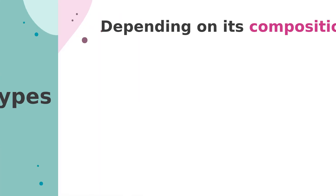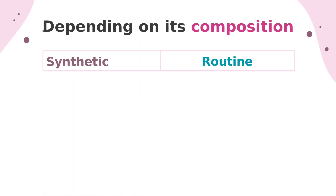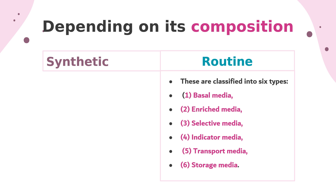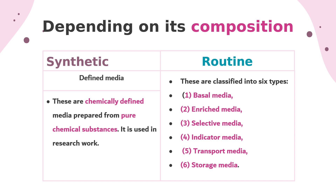What are the types of nutrient media? They are classified depending on many factors. Depending on their composition, they are classified into synthetic media and routine media. Routine media are classified into six types: basal media, enriched media, selective media, indicator media, transport media, and storage media.